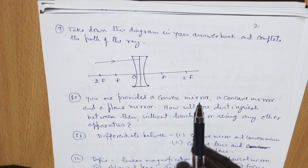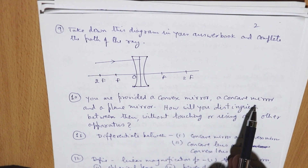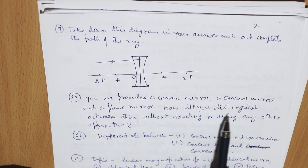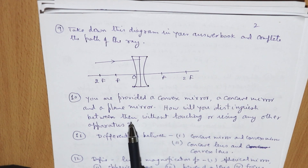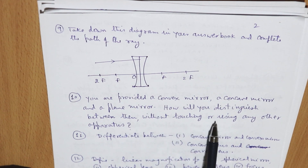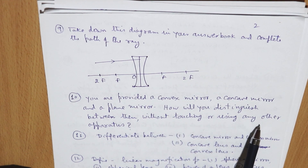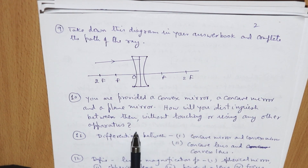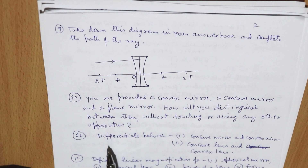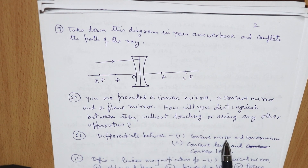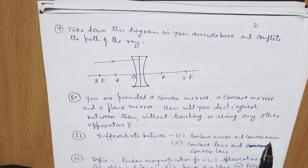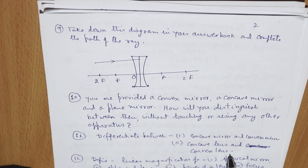Next question: you are provided a convex mirror, a concave mirror, and a plane mirror — how will you distinguish between them without touching or using any other apparatus? Also, differentiate between concave mirror and convex mirror, and between concave lens and convex lens.